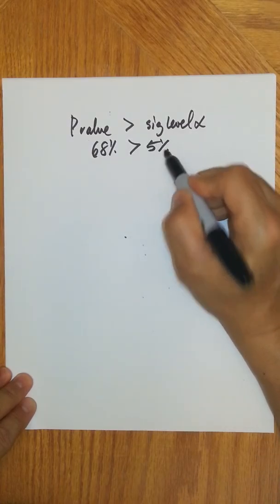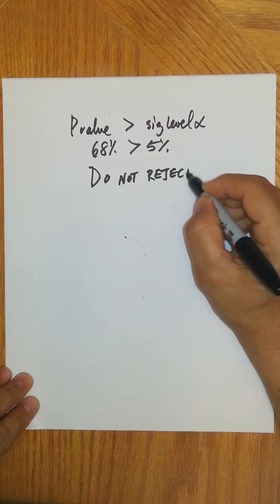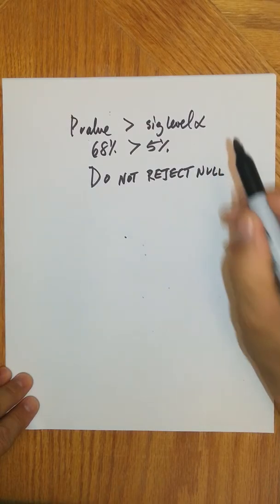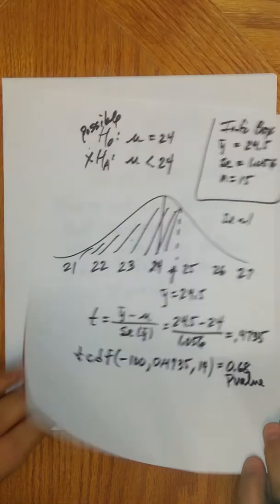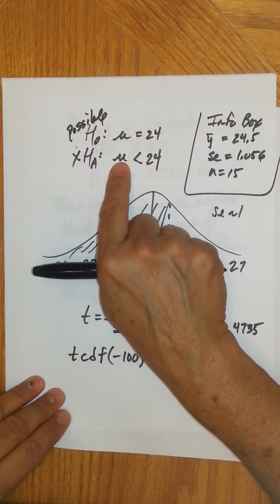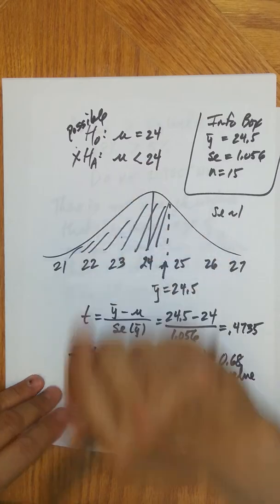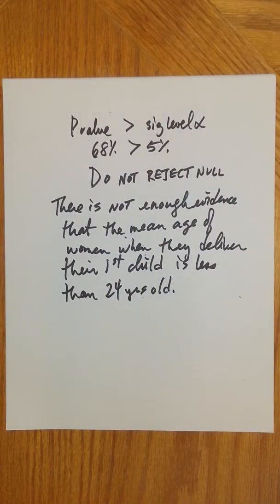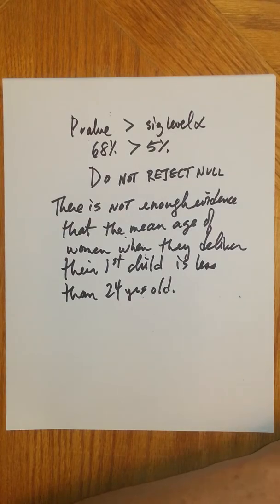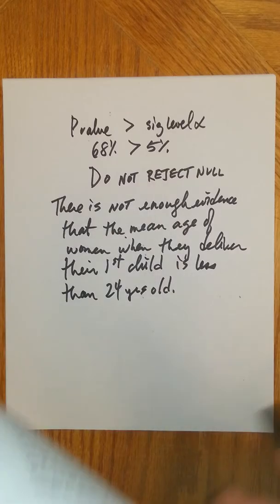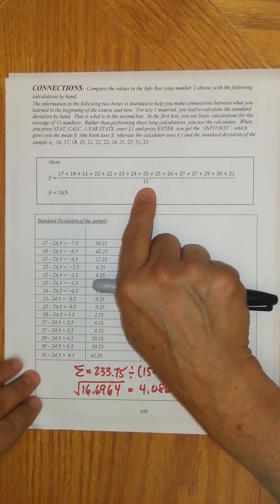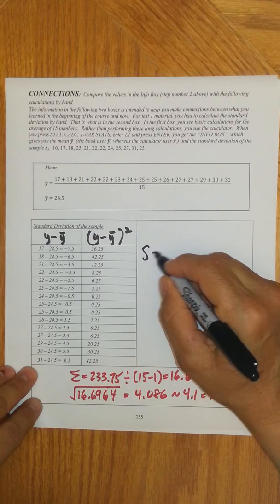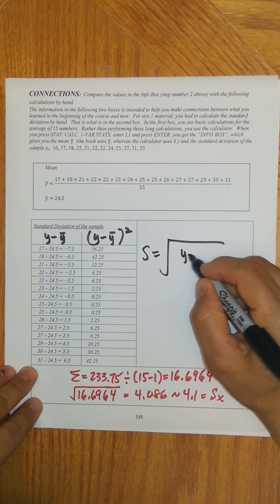With 95% confidence, the average age of women when they deliver their first child is between — rounding — 22.2 to 26.7 years. There's our confidence interval.